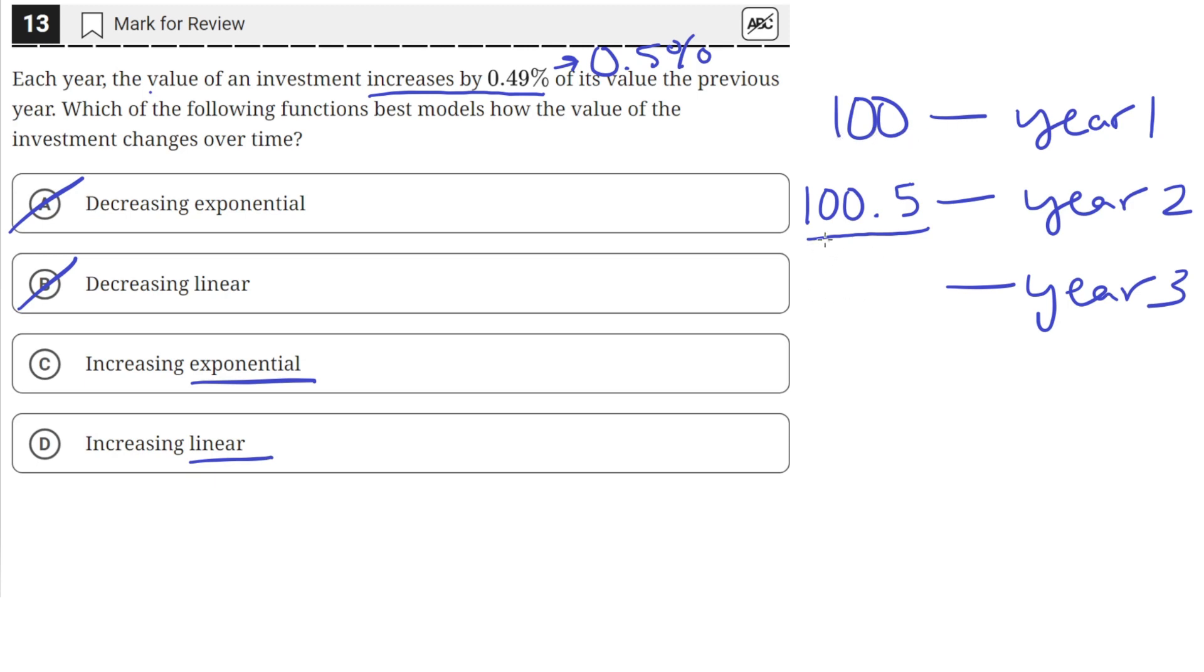The actual change will be different and it will be increasing every time. This makes it an increasing exponential function, not linear. Because linear would just be it increases by 0.5 every year or some other constant value. But this is a percentage, so the actual change every year is not constant. So C is the correct answer.